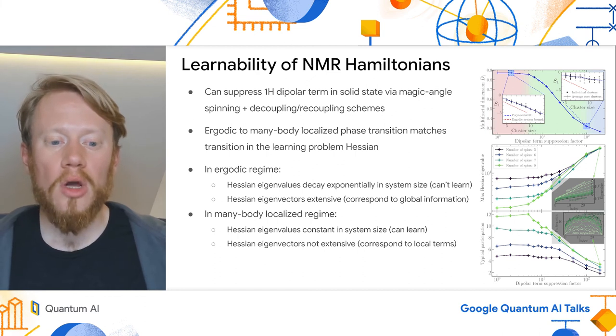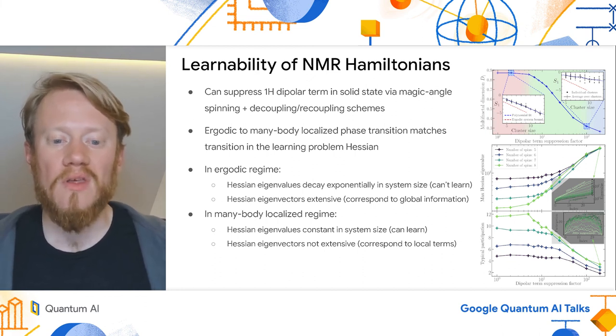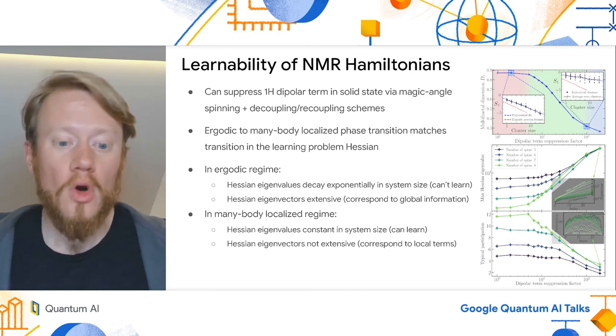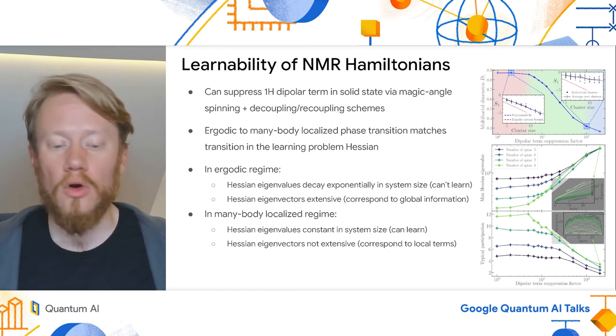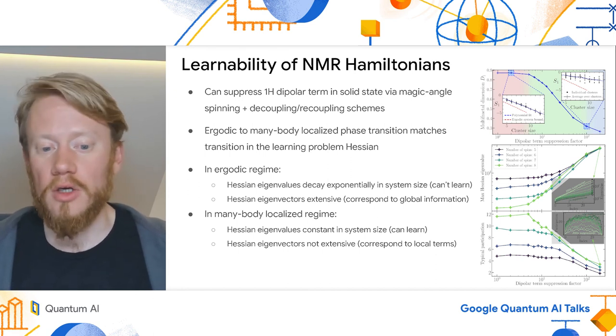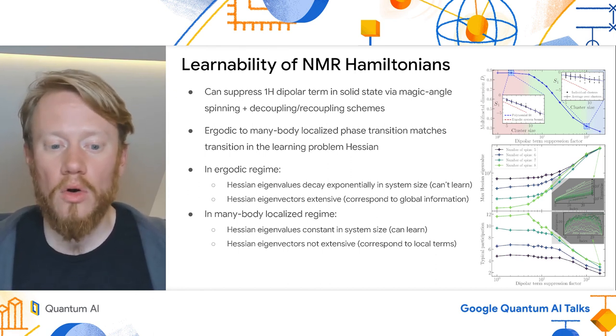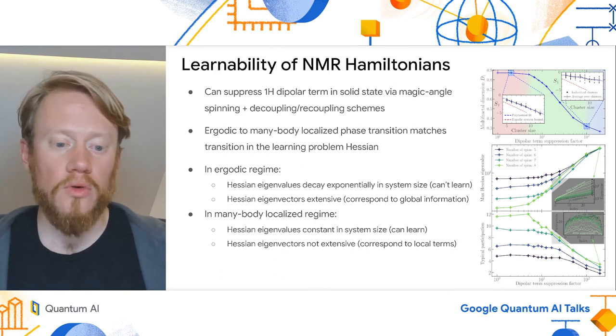Furthermore, in the ergodic regime, each eigenvector corresponds to some global linear combination of parameters, corresponding to a large typical participation, which means that what we do learn is highly non-local. In the localized regime, we have a small typical participation, which implies that each eigenvector we learn corresponds to a linear combination of a few local terms.